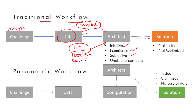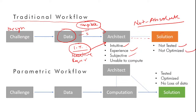In traditional workflow, both tangible and intangible data enter the architect's head, and based on intuition, experience, and subjectivity, a solution is produced. The problem is that for intangible data, your brain is a good place to sort it out — but for tangible data, as soon as it enters your head it becomes intangible. You can no longer find patterns in it or apply formulas to it. The resulting solutions are neither tested nor optimized — they could be high-performing or poor-performing buildings, and we won't know until we build.